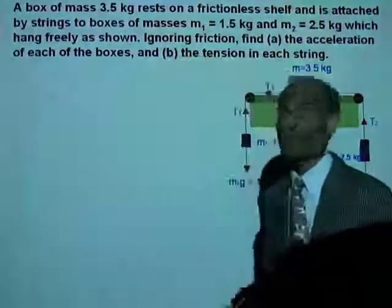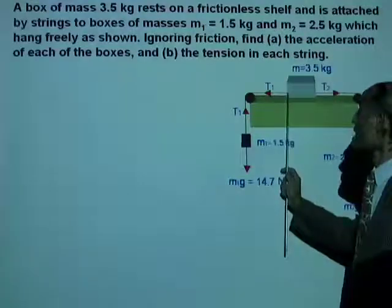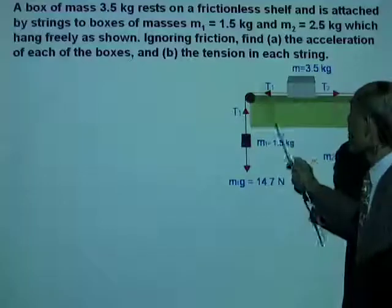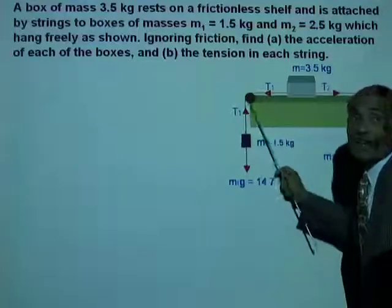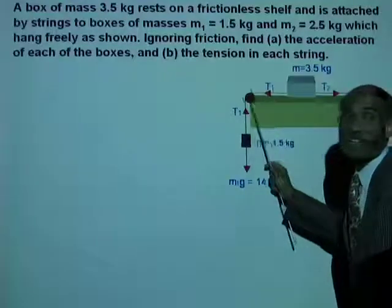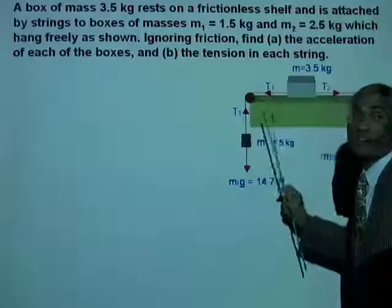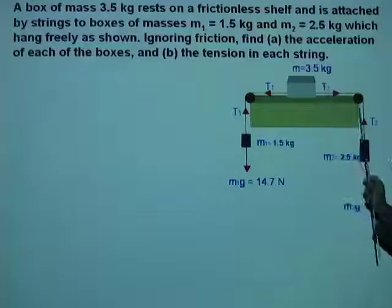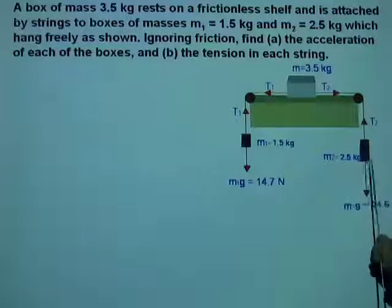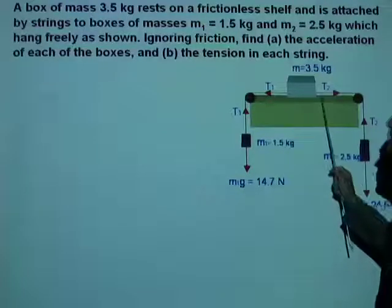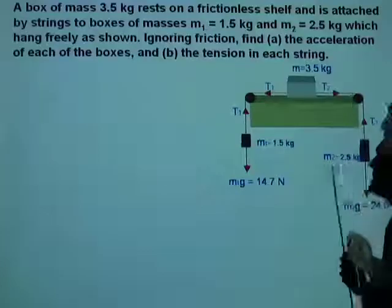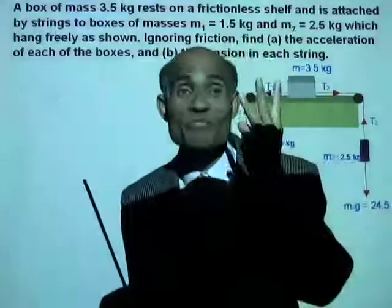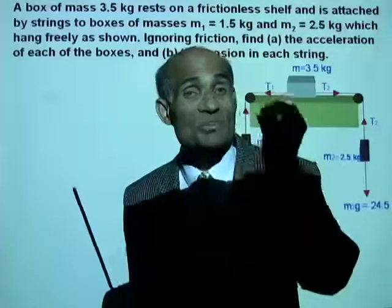Now here, there are two pieces of string. A string that connects the top mass with the left mass, that is this. There is a tension T1 on that string. And the second string connects the 3 kg mass to the 2.5 kg mass, and the tension on that string is T2. That means there are going to be three variables here and three equations.